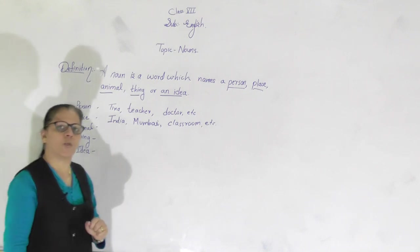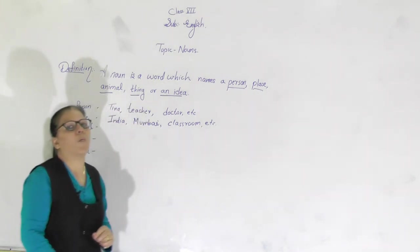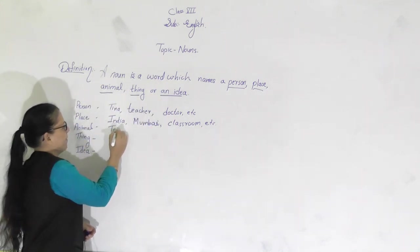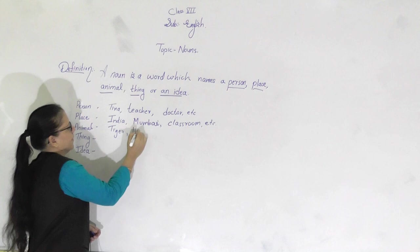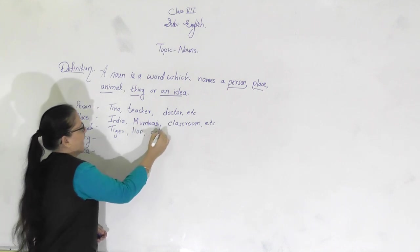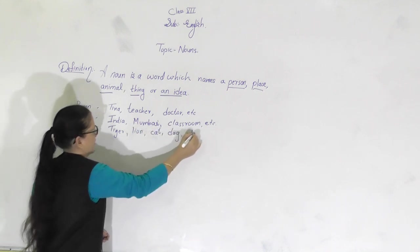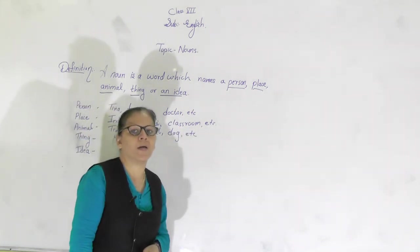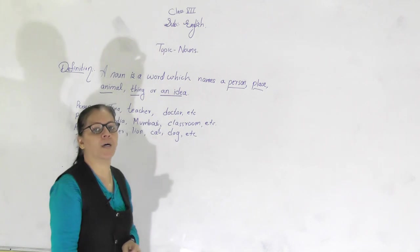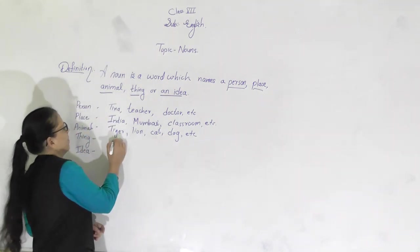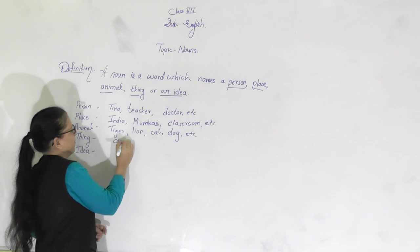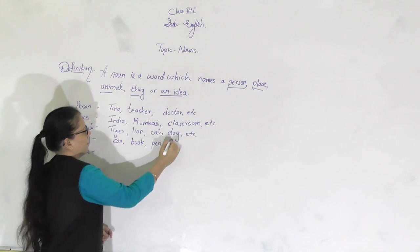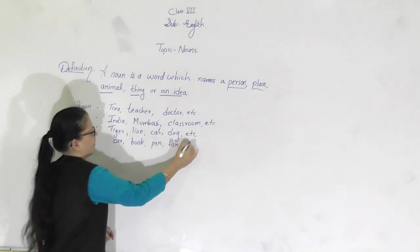Now let us see examples of animals. You all are familiar with the names of animals — like tiger, lion, cat, dog, etc. A noun is also a name given to a thing. For example, car, book, pen, fan, etc.